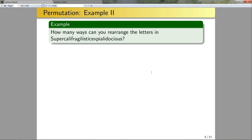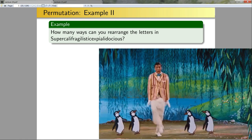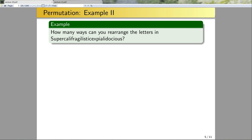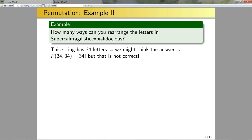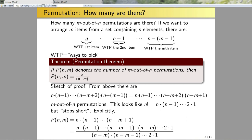Example two: how many ways can you rearrange the letters in 'supercalifragilisticexpialidocious'? This word has 34 letters, so we might think the answer is P(34, 34) or simply 34!. But this is not correct — the theorem works with a set of n unique elements, and some letters are repeated, so we need to remove duplicate permutations.